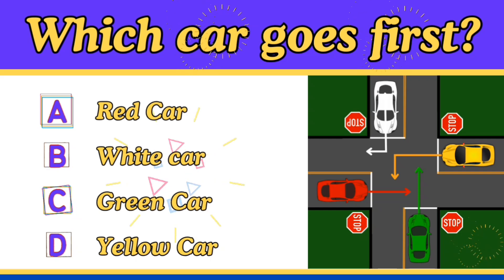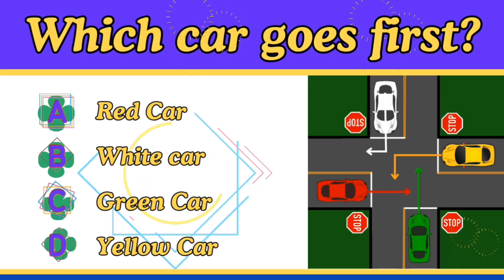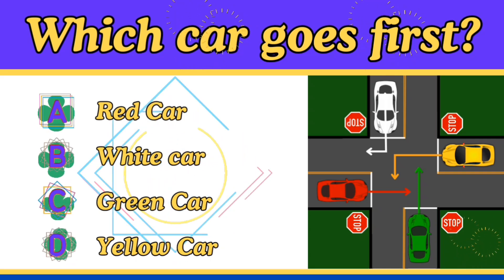Now let's solve this intersection. This is what we call a four-way stop, which means that all cars from all four directions must come to a complete stop immediately behind the stop line.